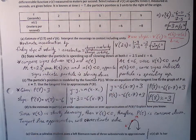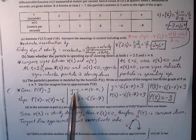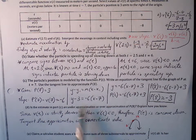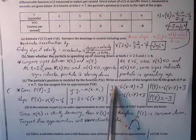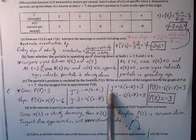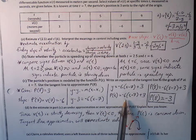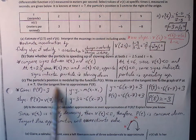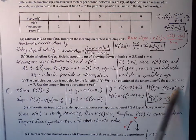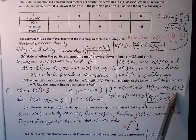Velocity at t equals 7 is negative 6, so p prime of 7 equals negative 6. We have our ordered pair and our slope, so we put it in point-slope form and solve for y. Since y represents position, we replace y with p of t and x with t. Once we have our position equation as a linear function, we plug in t equals 8 to approximate p of 8: negative 6 times 1 plus 3 equals negative 3.